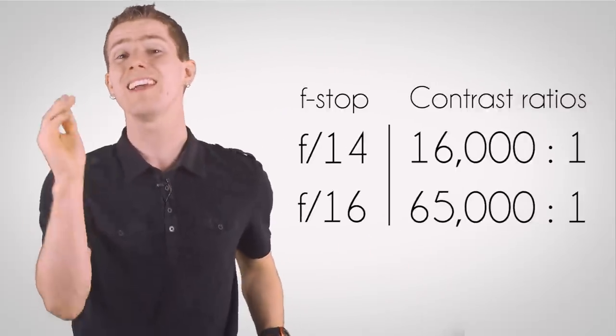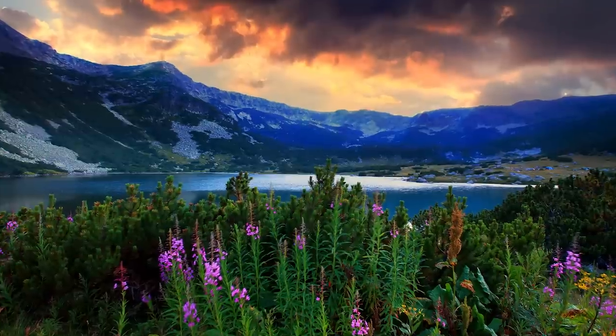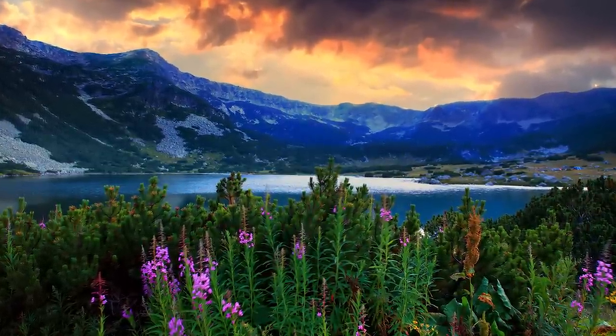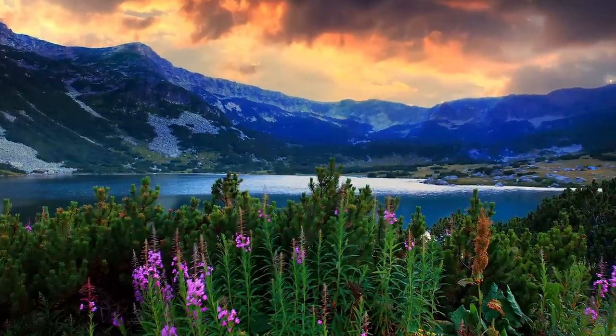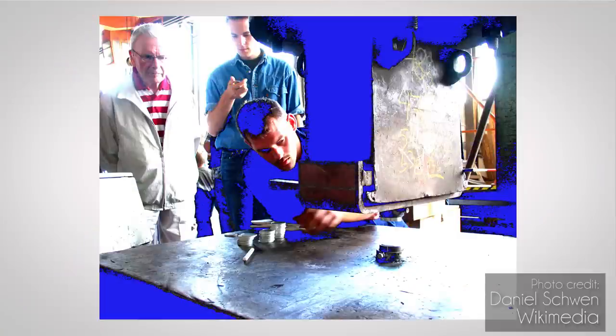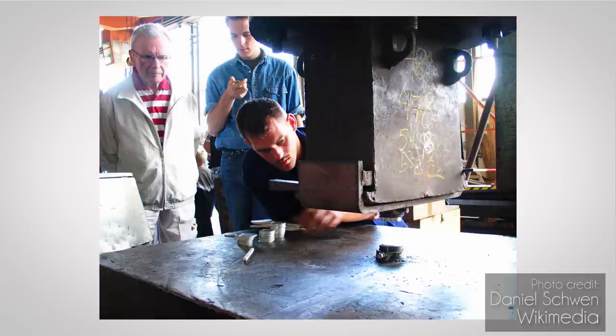To put that in perspective, the best cinema-grade digital cameras top out in the neighborhood of 14 to 16 stops of dynamic range today. While that allows their operators to capture beautiful images that have a mixture of bright light and deep shadows without clipping, or losing so much detail that all the camera captures is complete blackness or blown-out pure white, it would appear that to achieve what the eye can, more is basically better and we've still got a lot of work to do.